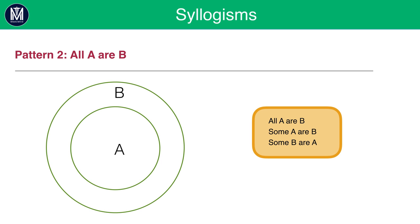Pattern 2: 'All A are B.' This is a very common question in the exam, so pay close attention. From this statement we know that all A are B, as stated, and by the same logic some A are B and some B are A.